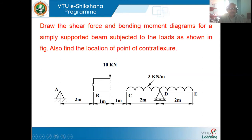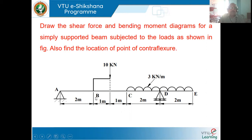We have a load at a certain distance from the point of application, so this is eccentric loading. Whenever we have eccentric loading, in addition to the direct load of 10 kilonewton at B, we also have to consider the couple due to that 10 kilonewton, that is 10 into 1. So at point B, in addition to 10 kilonewton of direct load, we will also have a clockwise couple of 10 kilonewton meter.